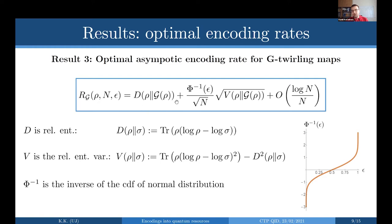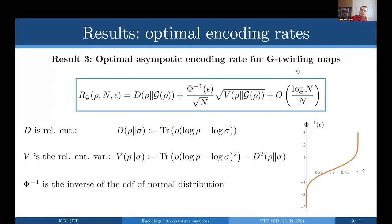The term Phi^{-1}(epsilon) is the inverse of the cumulative distribution function — not one over it, but the inverse function. If you want a rate bigger than the asymptotic rate, meaning this correction term positive, your error has to be larger than one half. If you want small error, this term becomes negative. So the second-order expansion tells us that with finitely many copies, without the law of large numbers, you get a smaller rate than the asymptotic one.